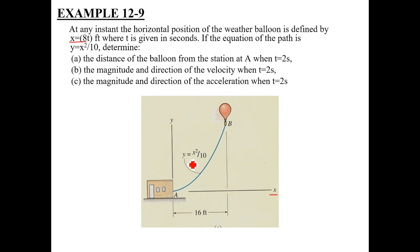Whereas you have y — the path function — it is not defined as a function of time. Rather, y is defined as a function of x. So you have a balloon travelling along this curved path from A to B. At any instant, x is defined as a function of time, whereas y is defined as a function of x, rather than as a function of time.